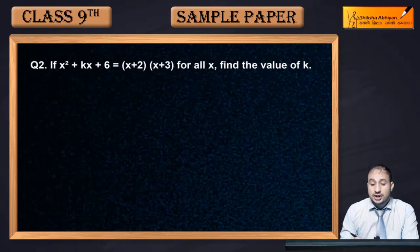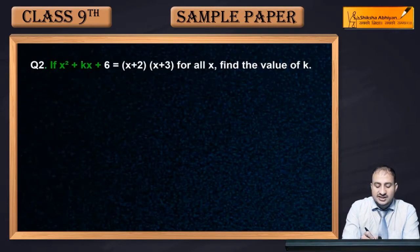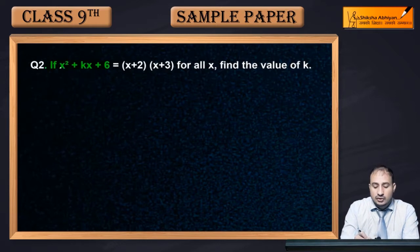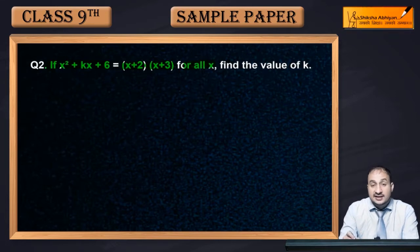Now see question 2. If x² + kx + 6 = (x+2)(x+3) for all x, then find the value of k.